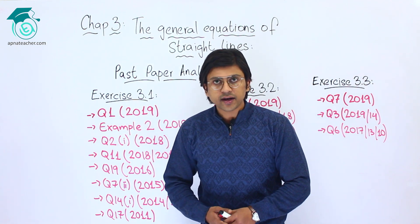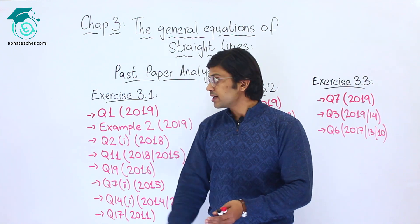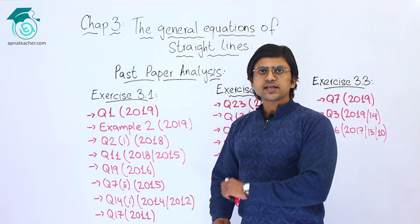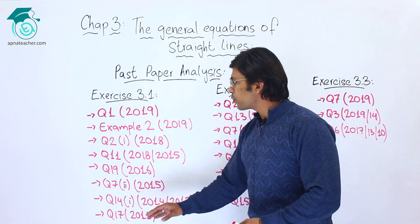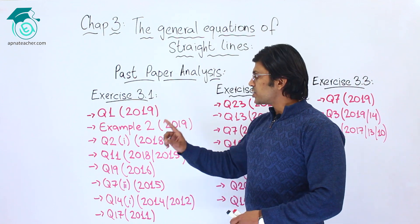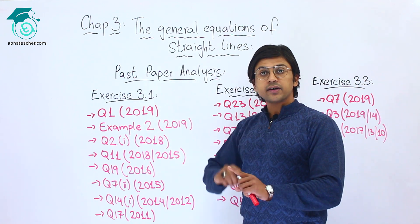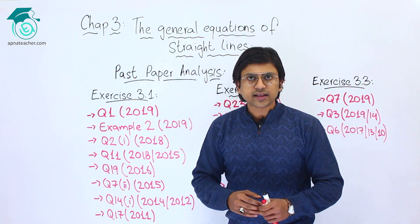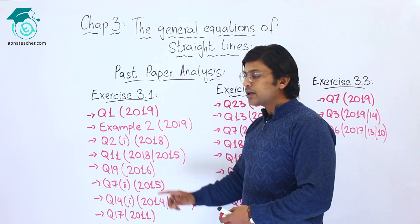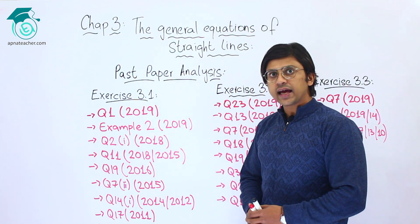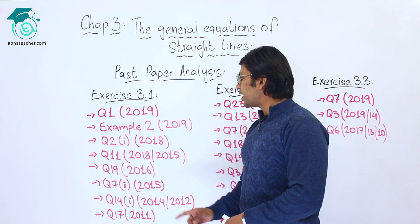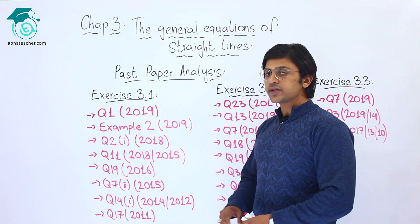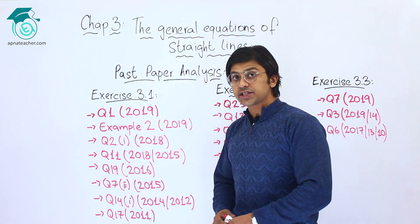First, let's talk about Exercise 3.1. Chapter number three has a total of three exercises. In Exercise 3.1, I have listed all the questions that appeared in the past 10 years. Question number one was asked in 2019, only once in the last ten years. Example number two — sometimes a solved example from the book appears instead of an exercise question — that example was also asked in 2019. Question number two part one was asked in 2018. Question number eleven was asked in two years: 2018 and 2015. Question number 19 was asked in 2016.